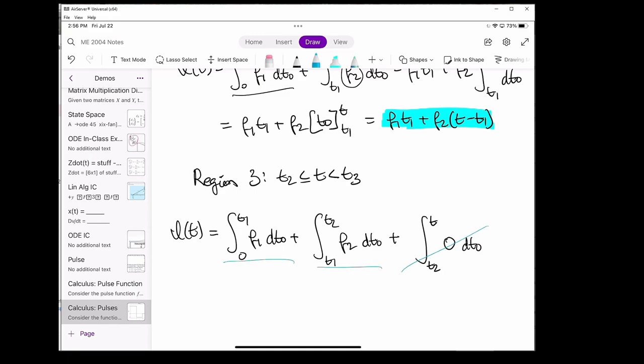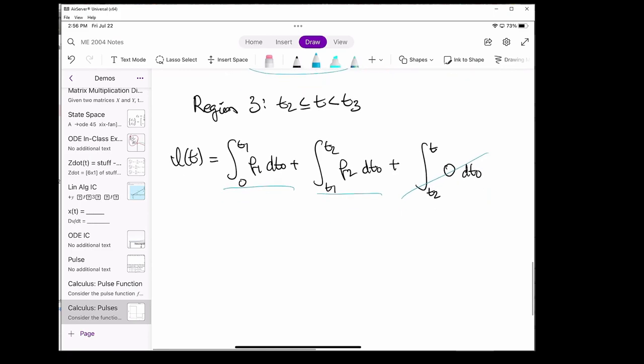I guess this one's pretty easy because obviously this entire integral will cancel out. We know what the value of this is, and we kind of know what the value of this is based on the last part with a minor tweak. If we change this t to t2, then all we have to do is re-evaluate this part of the integral, and this will give us the answer for I of t for region 3. And this is our answer for I of t for region 3.